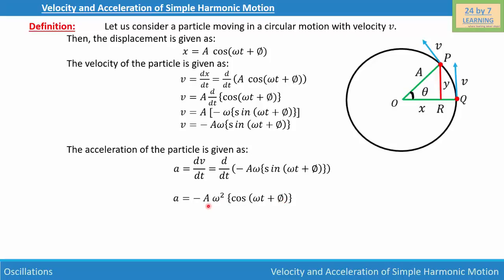To simplify further, we bring A inside with the cosine term: a = −ω² · [A cos(ωt + φ)]. Since A cos(ωt + φ) equals x, we substitute to get a = −ω²x. So the displacement, velocity, and acceleration of simple harmonic motion are x = A cos(ωt + φ), v = Aω sin(ωt + φ), and a = −ω²x.